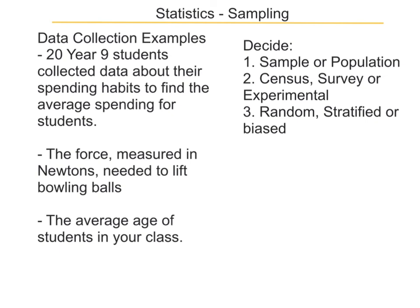Here are some examples about collecting data. In the first one, 20 Year 9 students have collected data about their spending habits to find the average spending for students — that's a sample, and it should be a random sample. The force measured in Newtons needed to lift bowling balls — that's experimental. The average age of students in your class — you could actually measure the whole population of that because there's only around 20 or so students, so that would be a census rather than just a sample.